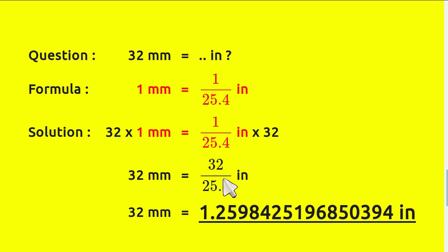32 divided by 25.4 equals 1.2598, and that's the answer. Thank you so much for watching.